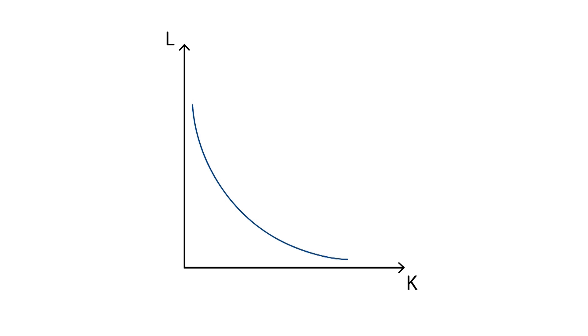This curve is an isoquant, which represents combinations of factors of production that produce the same level of output. This isoquant gives a production output level of 1x, as a result of using one unit of capital and one unit of labour.